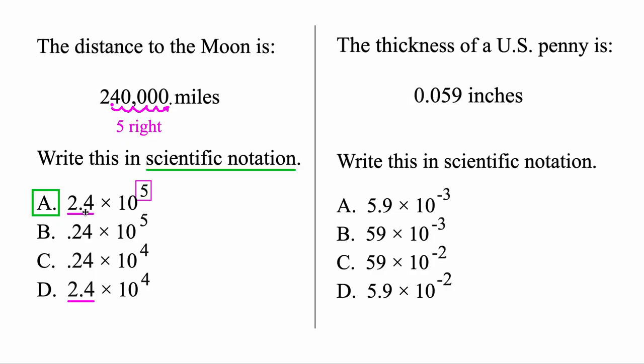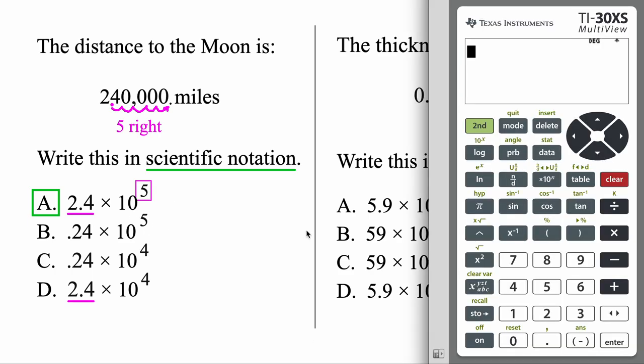So A, 2.4 times 10 to the 5, same thing as 240,000 miles. But let's confirm with the calculator. Let's start off with 2.4. And by the way, this is the same calculator they'll give you for the GED tests. And then we're going to multiply times 10 to the power 5. So we're just typing in the answer we got. To do the power, you'll use this up arrow here. And then 5. And enter. Okay, we get 240,000, same thing we started with. So therefore, these two numbers are the exact same, in scientific or in standard notation there.